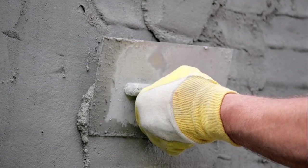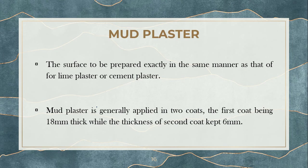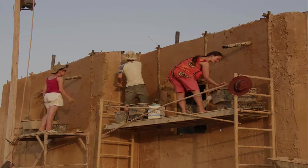Next comes mud plaster. Mud plaster is exactly made by mud — we see it in old houses, old huts, and old structures. The surface preparation is the same as for lime or cement plaster: cleaning the surface, scraping out excess material, and so on. Mud plaster is generally applied in two coats because it is not as resistive compared to lime or cement. In the first coat you apply 18 mm thickness, while the second coat is 6 mm, so the overall thickness of mud plaster is around 24 mm.